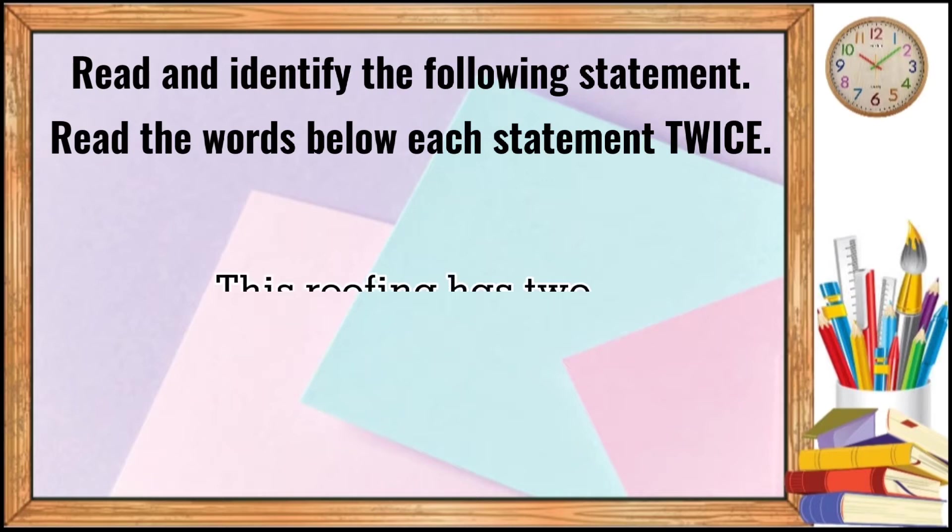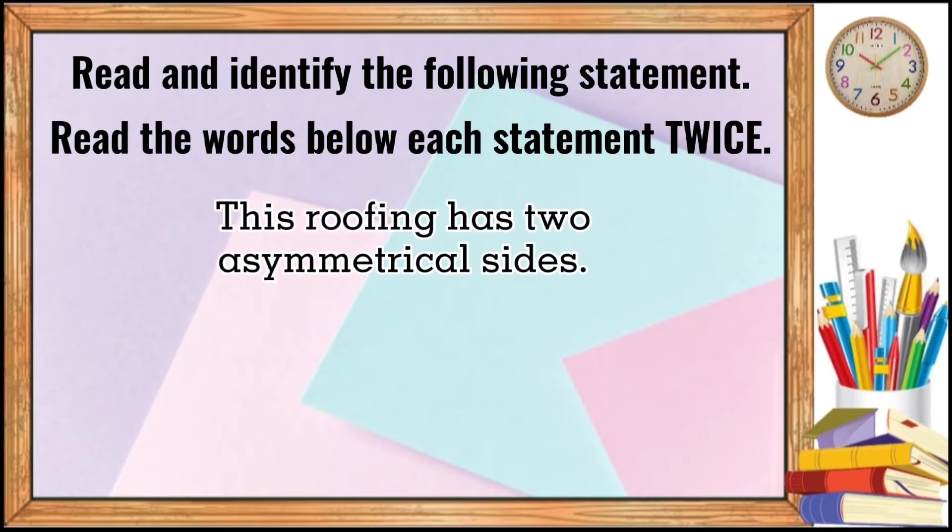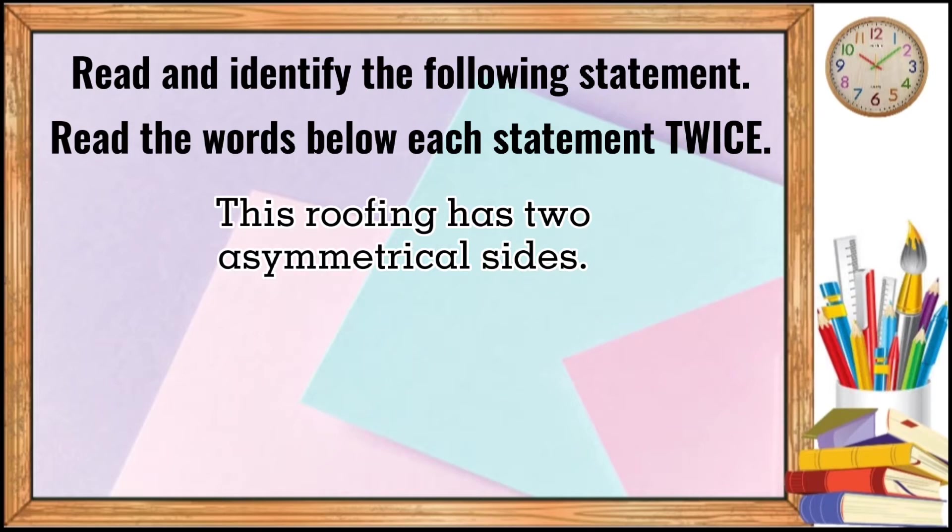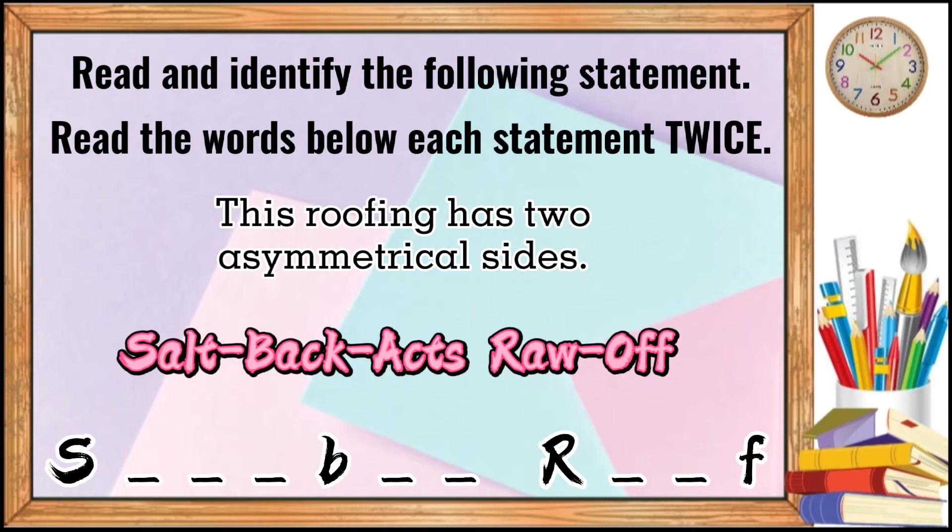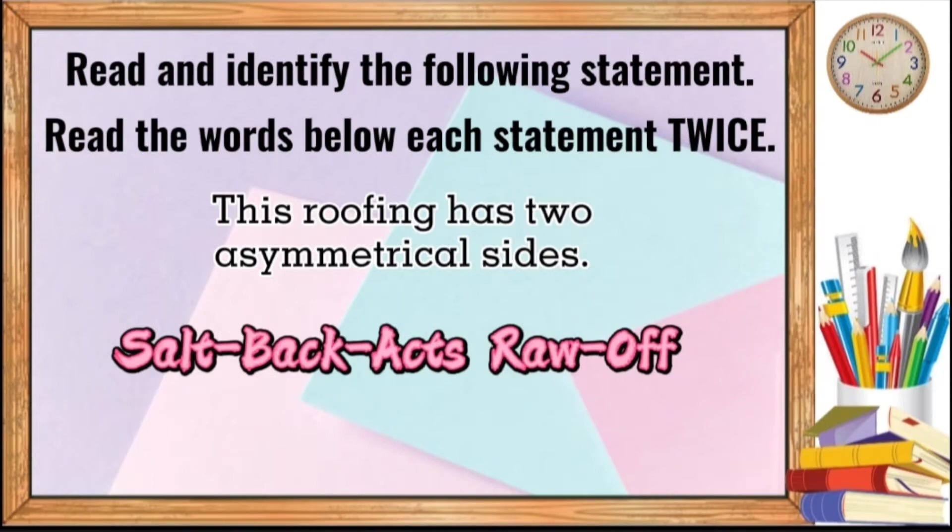I have a sample statement that we are going to identify. This roofing has two asymmetrical sides. Here is the clue. Salt, back, axe, row, off. Salt, back, axe, row, off. Therefore, the answer is saltbox roof.